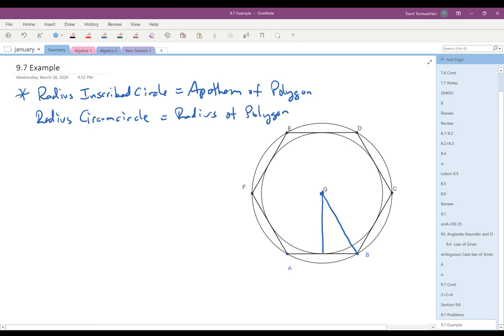So we might have a problem like this. Find the area of these shaded regions, and we could be given anything. And so we've got these three different shaded regions, and we could be given anything. And so let's just go ahead and say that we're given the radius of the polygon is six. And this is a hexagon.